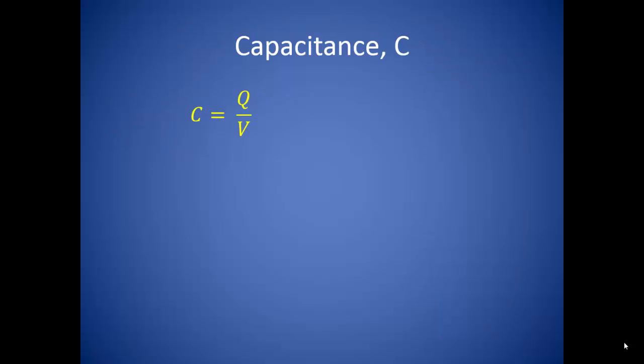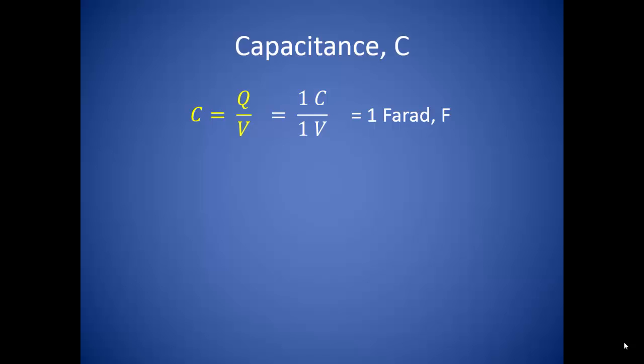Capacitance is simply the amount of charge stored per volt. This gives us a label of coulombs per volt, or one farad.